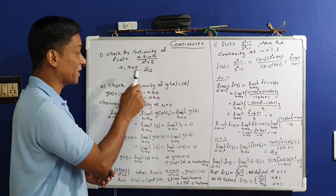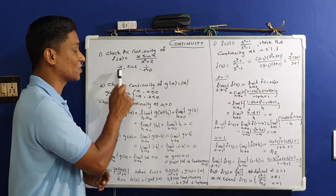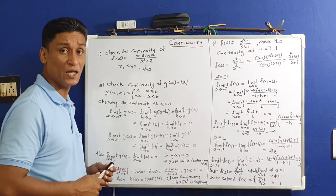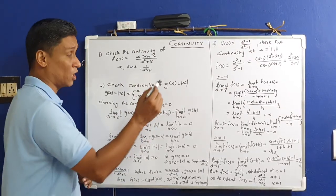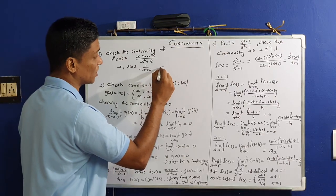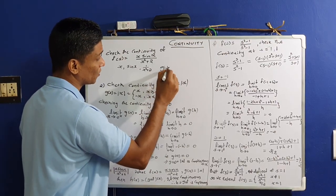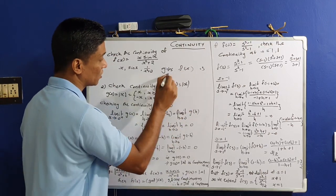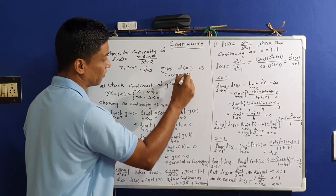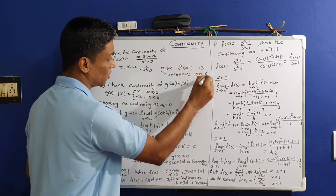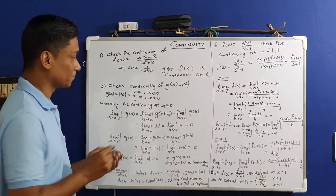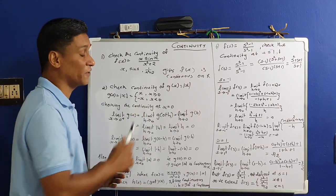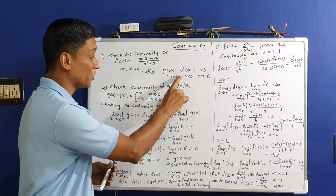The component functions x, sin(x), and 1/(x²+2) are all continuous. By the definition of continuity, their combination gives that f(x) is continuous on ℝ, the set of all real numbers.